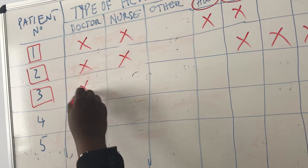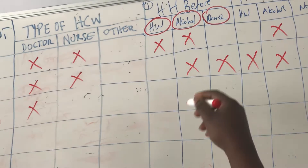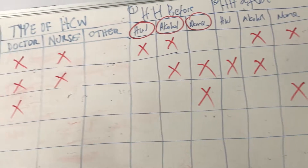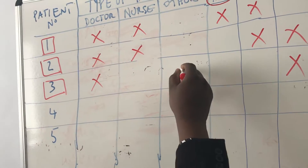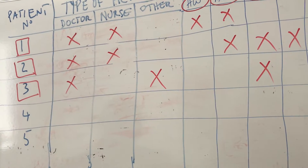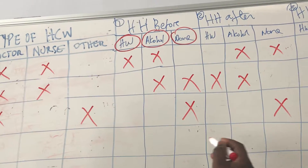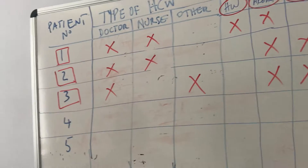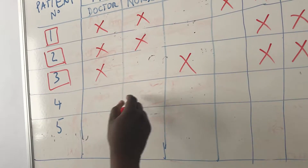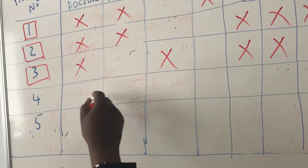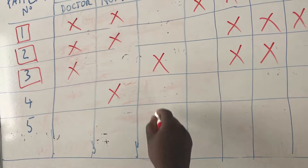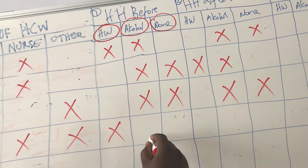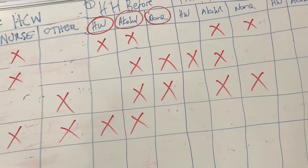For the third patient, the doctor came and took no positive action before contact and no positive action after contact. A physiotherapist also came to see this patient and used alcohol hand rub. A radiographer came as well — the nurse used hand washing before patient contact, and the radiographer used alcohol hand rub before contact but did not take any positive action after.